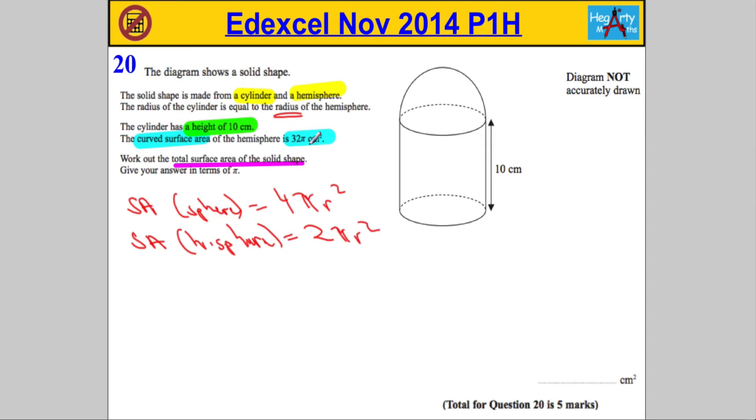Now, we were told that this curved surface area of our hemisphere is 32π. So I can now say that 2πr² must equal 32π. I'm going to divide both sides by 2 to get 16.